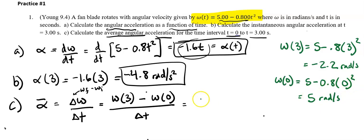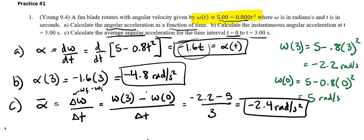We got it all. So let's go ahead and plug it in. Omega(3) is -2.2, take away omega(0) which was 5, over a change of time. That's the time interval that's changing. So we're dealing with a 3 second time interval, and I got -2.4 radians per second squared. Perfect. Thanks for watching.